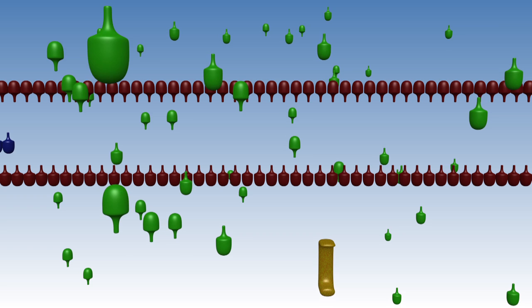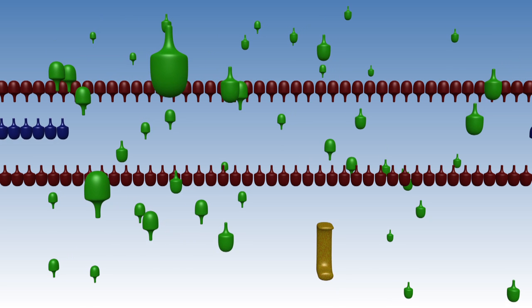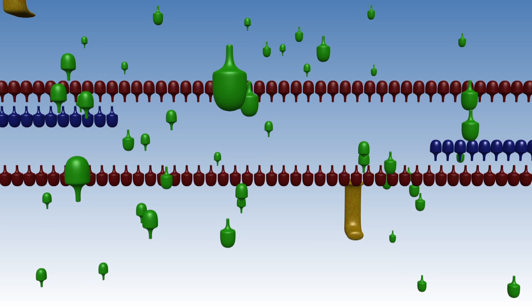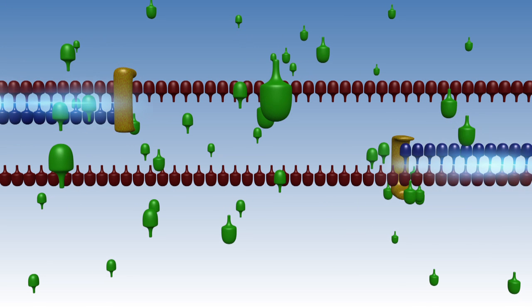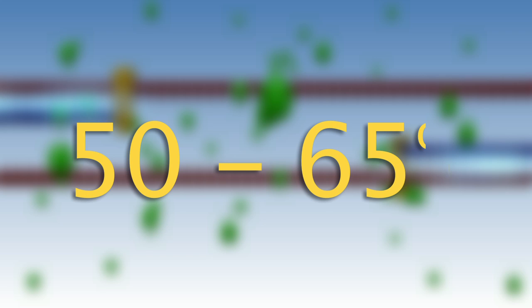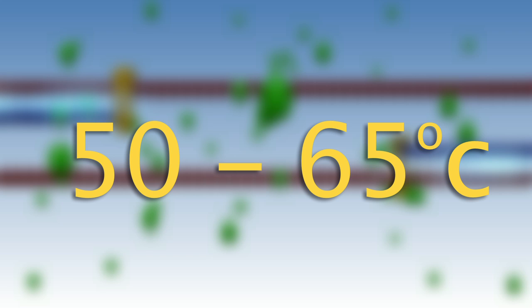The following step, when the primers are able to bind to the template at a lower temperature, is called annealing. This temperature depends on the TM or melting temperature of your specific primers and is usually between 50 to 65 degrees centigrade. This step doesn't need to last very long, typically 10 to 30 seconds.